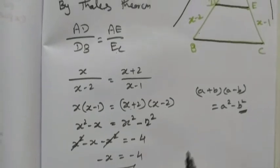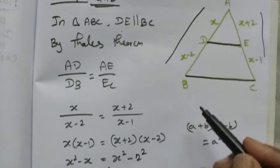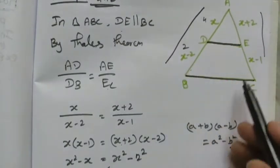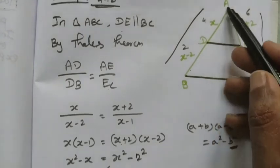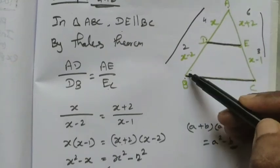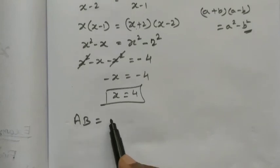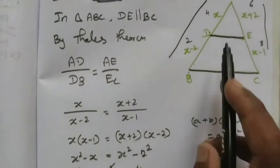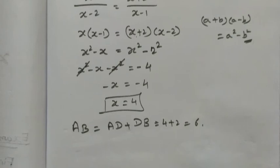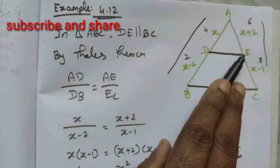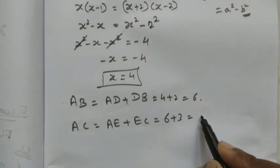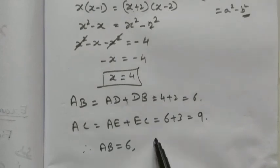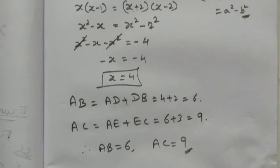Now we substitute x equals 4: AD is 4, DB is 4 minus 2 equals 2, AE is 4 plus 2 equals 6, and EC is 4 minus 1 equals 3. Therefore AB equals AD plus DB equals 4 plus 2 equals 6. And AC equals AE plus EC equals 6 plus 3 equals 9. So AB equals 6 and AC equals 9 is the answer. Thank you, students.